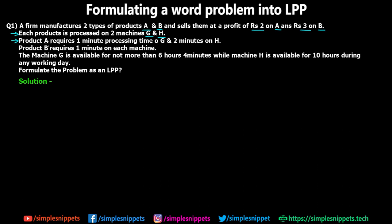Product A requires one minute processing time on machine G and two minutes on machine H. Similarly, product B requires one minute on machine G and one minute on machine H. We've also been given a constraint: machine G is available for not more than 6 hours and 40 minutes, while machine H is available for 10 hours during any working day. So both machines have a limited availability per working day.